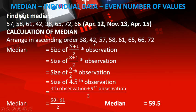The values arranged are: 38, 42, 57, 58, 61, 65, 66, and 72. After arranging in ascending order, we apply the formula. N is 8 values. So (8+1)/2 = 9/2 = 4.5. It is the 4.5th value.